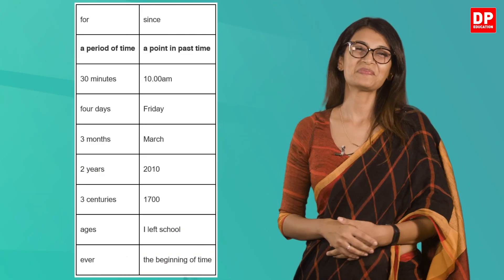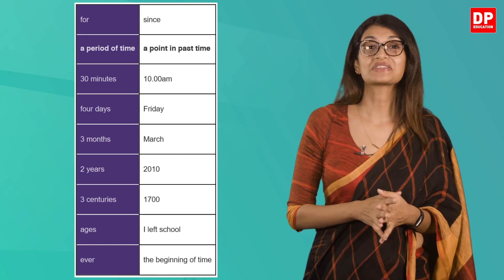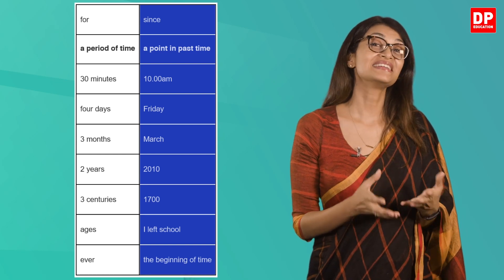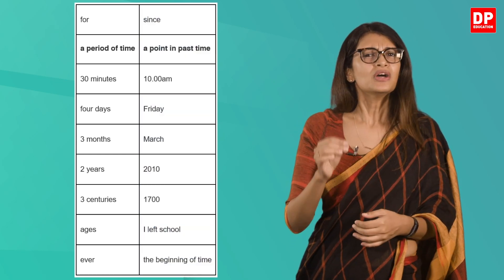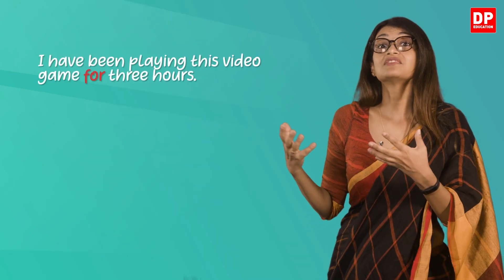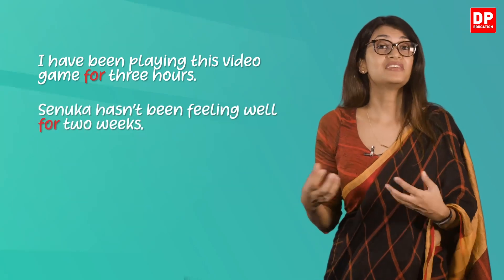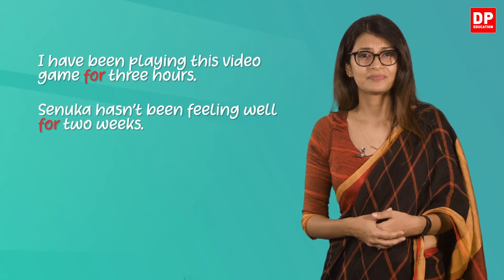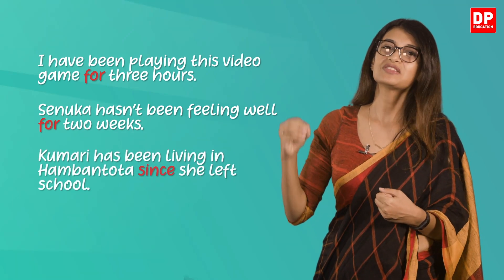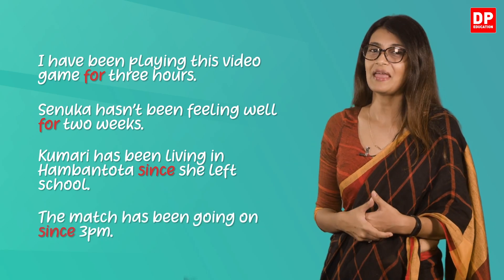Let's look at this table. The first column shows the phrases you can use alongside 'for,' and the second column shows what you can use alongside 'since.' Using this table, I can say: 'I have been playing this video game for three hours.' 'Senuka hasn't been feeling well for two weeks.' 'Kumari has been living in Hambantota since she left school.' 'The match has been going on since 3 pm.'